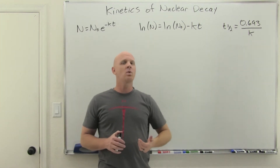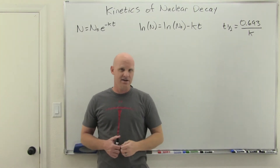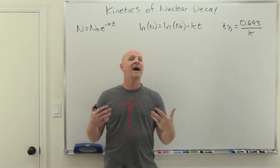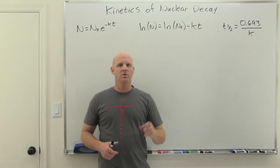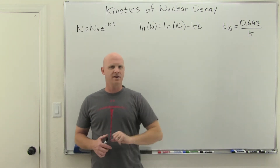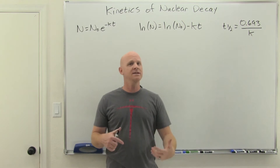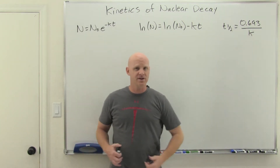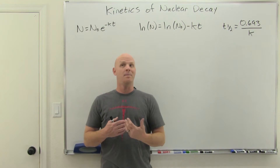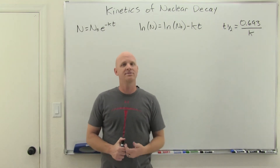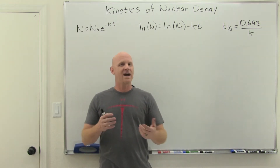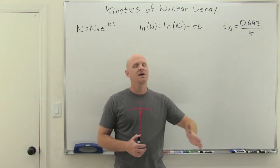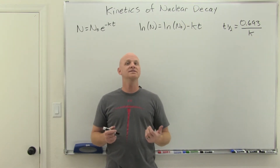We also have to talk about what's called the half-life. Most radioactive nuclides have a characteristic half-life. These can be pretty short — on a time scale of a few seconds or a few minutes — but they can also be very long. There are certain isotopes of uranium with a half-life of about a billion years. The half-life is the time it takes for half of your radioactive sample to disappear.